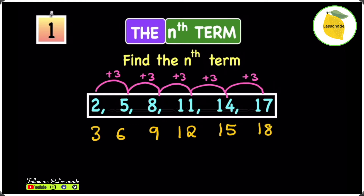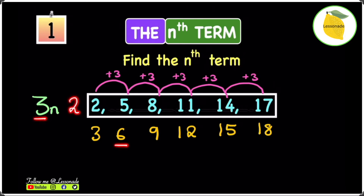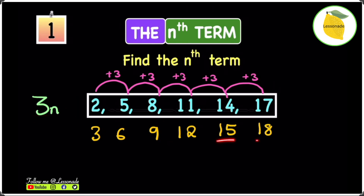The 3 times table can also be written as 3n. If n is 1, you do 3 times 1 which gives you 3. If n is 2, you do 3 times 2 which gives you 6. If n is 3, you do 3 times 3 which gives you 9. And if n is 4, you do 3 times 4 which gives you 12. So 3n is basically the 3 times table.